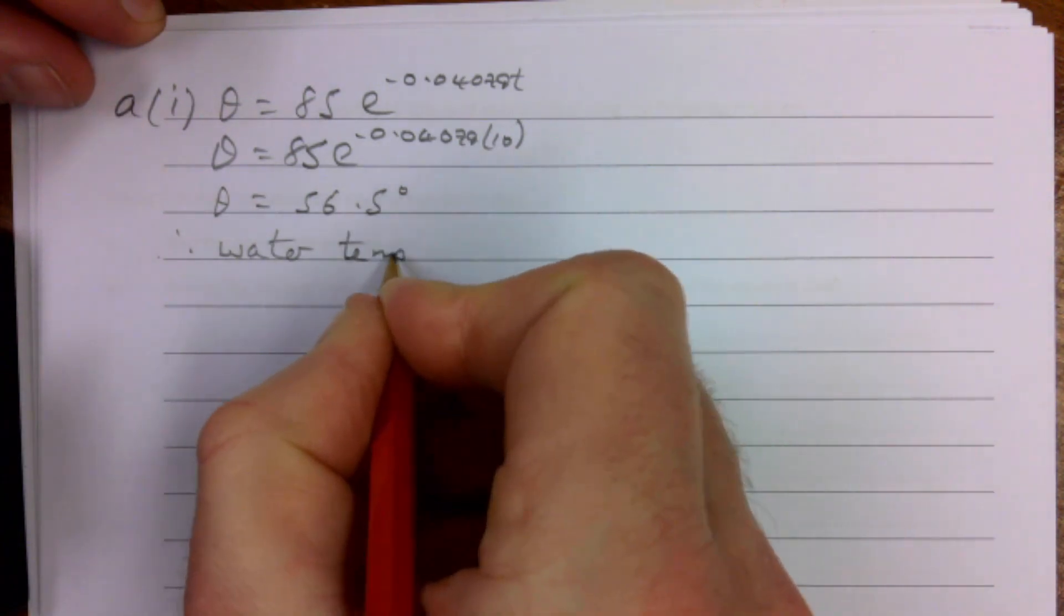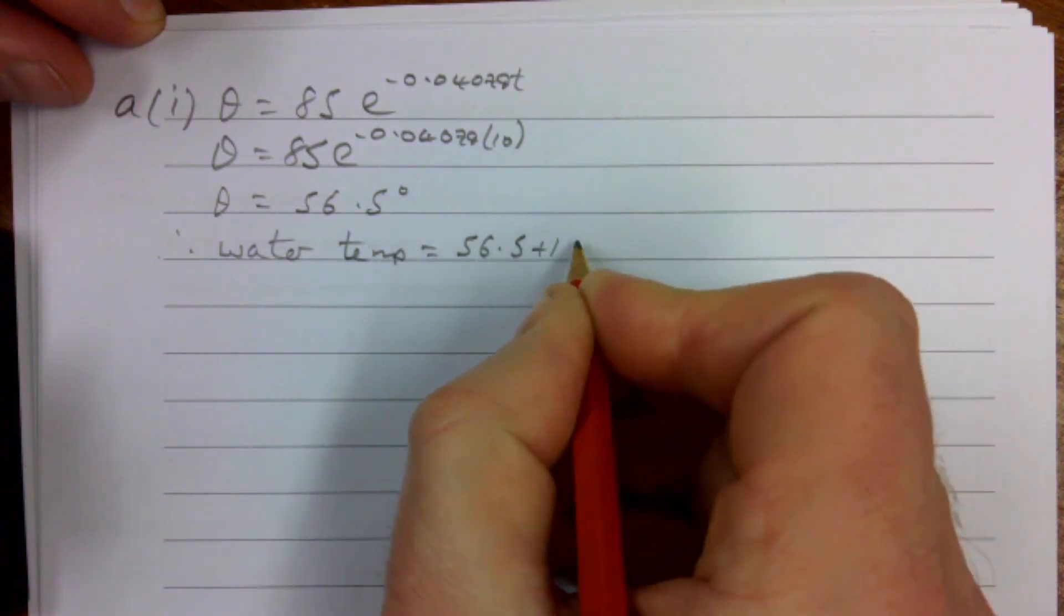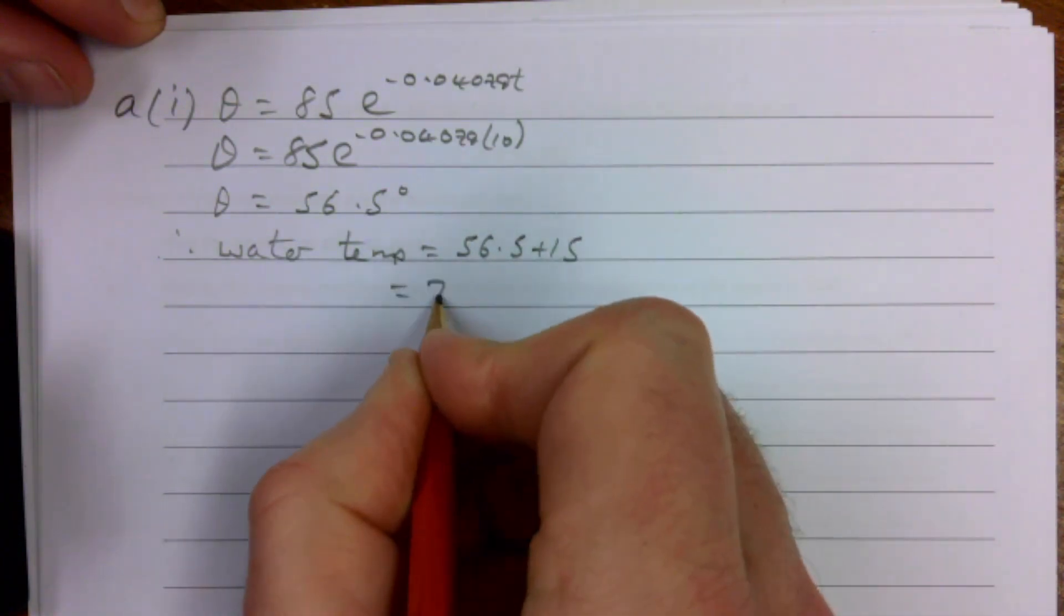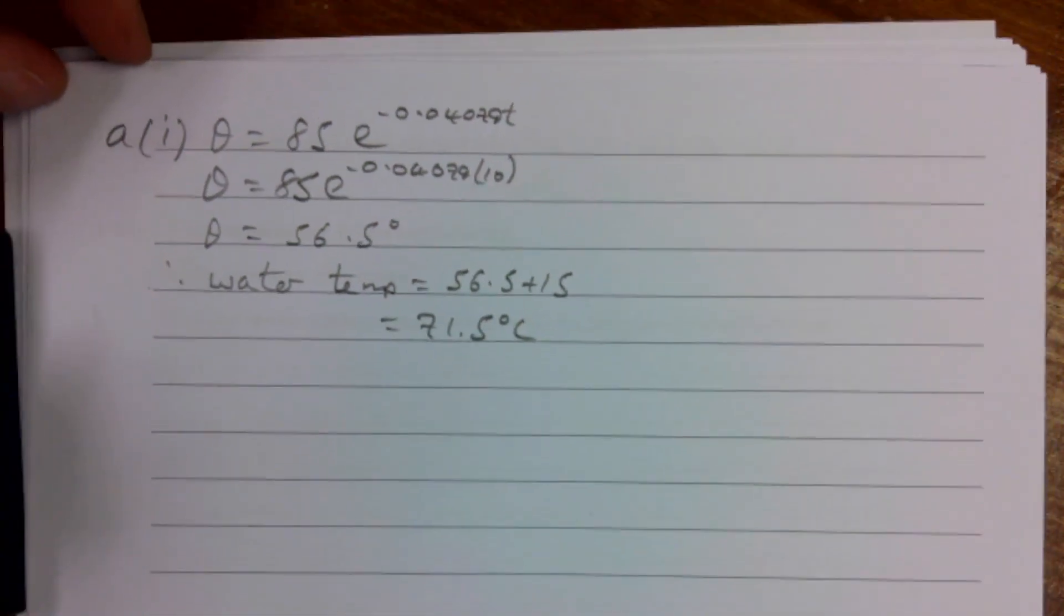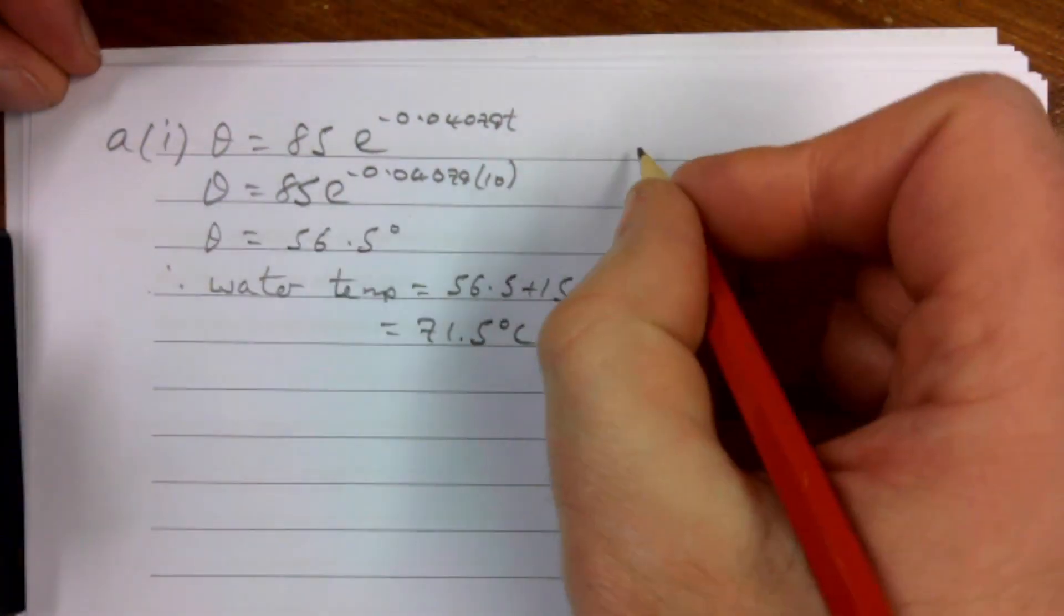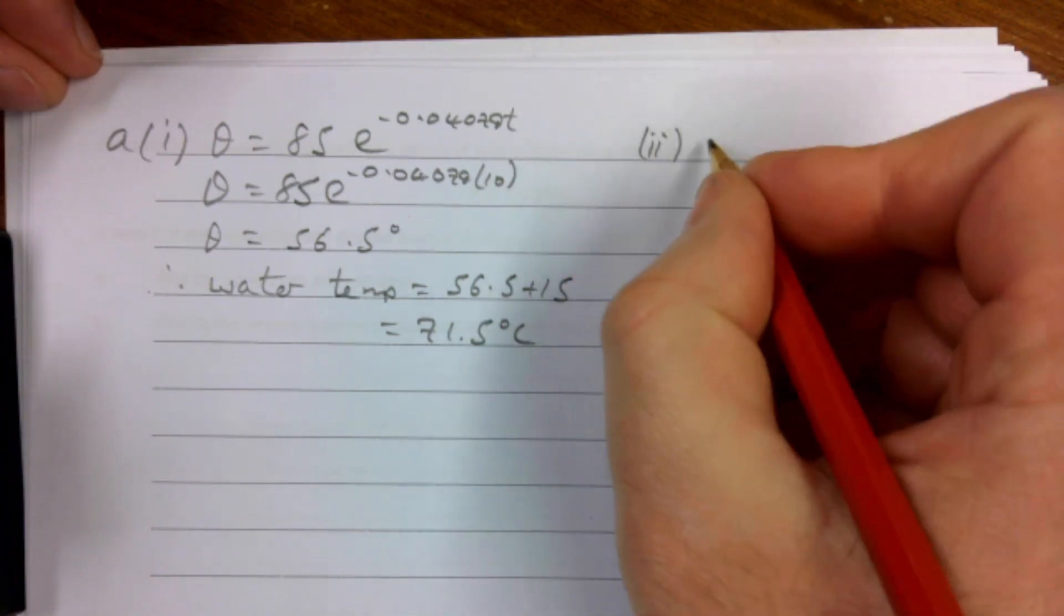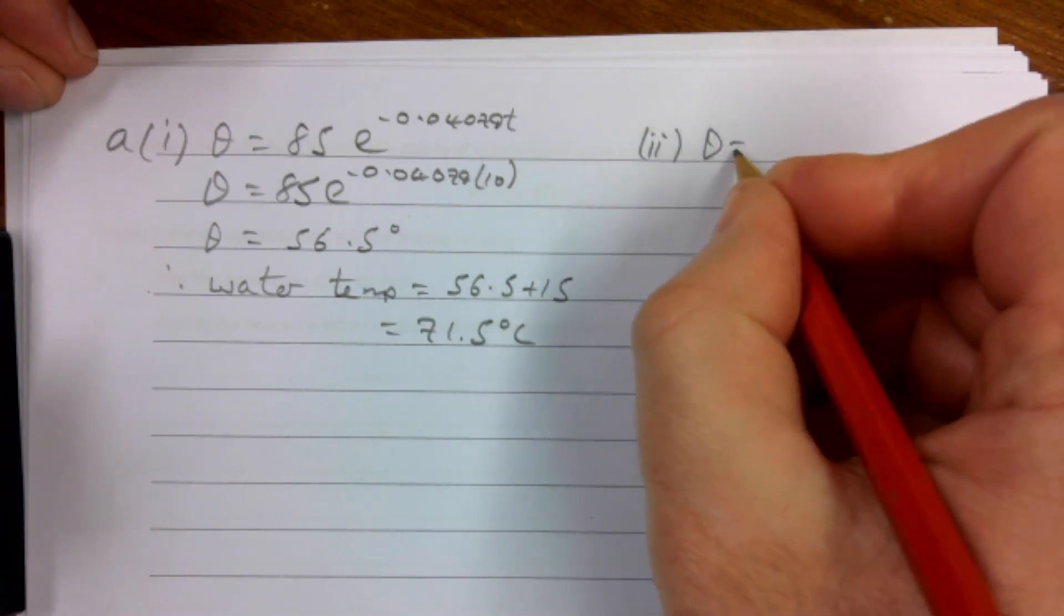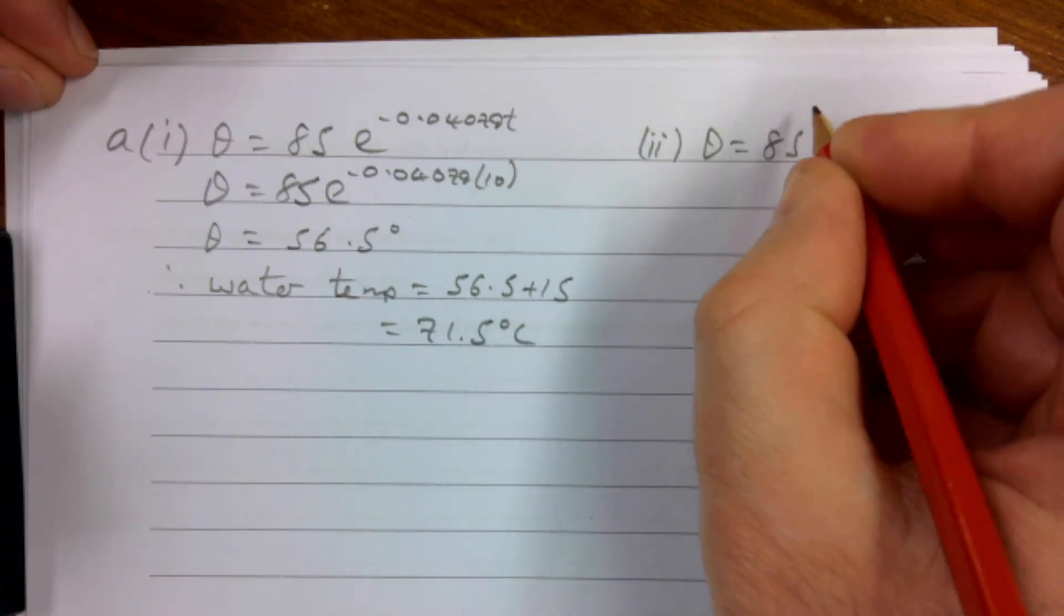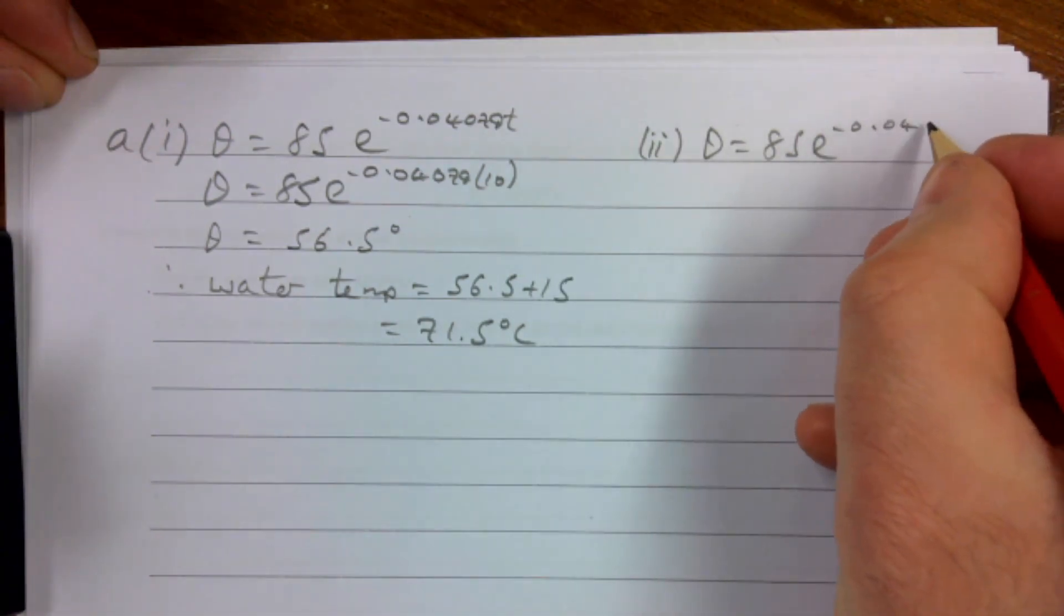Therefore, water temperature is 56.5 + 15, which is 71.5°C. For part 2, dead straightforward, I'm just going to use the same thing again.